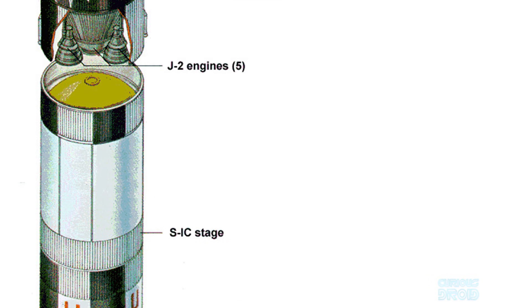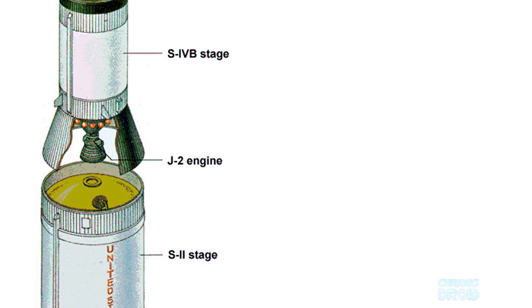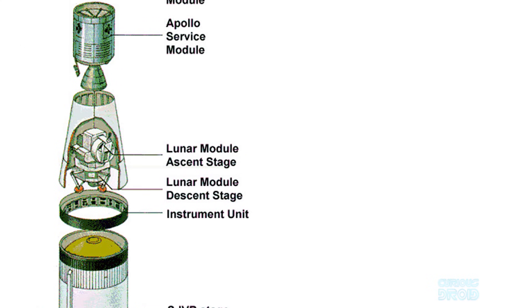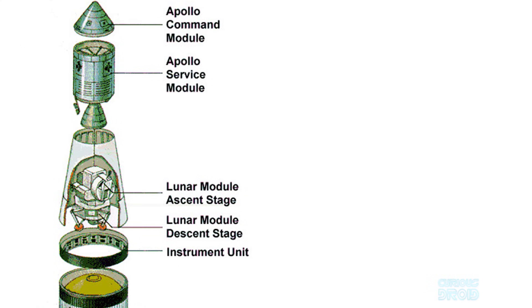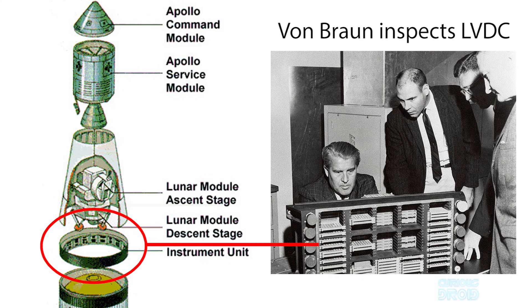The first of the four computers was the Saturn launch vehicle digital computer, or LVDC. This got the rocket from the launchpad to earth orbit.